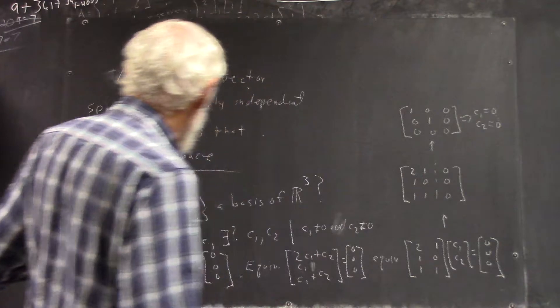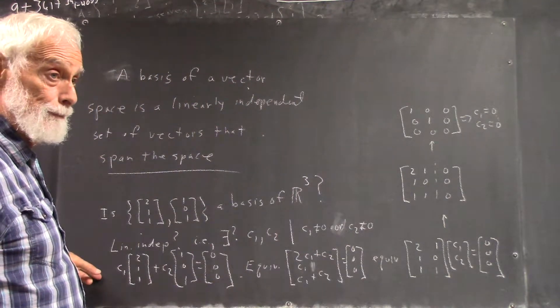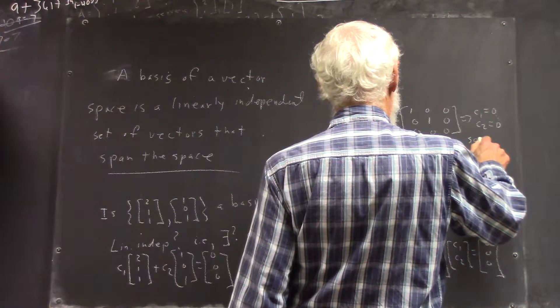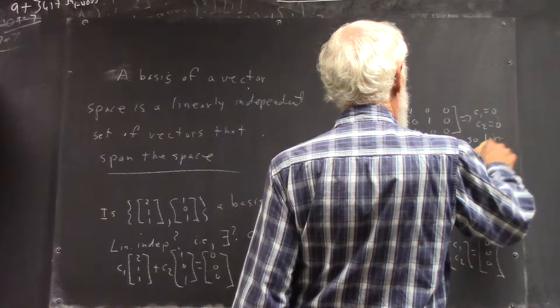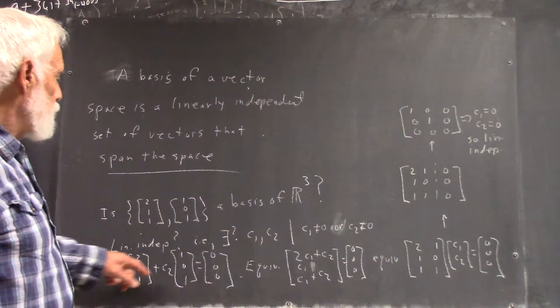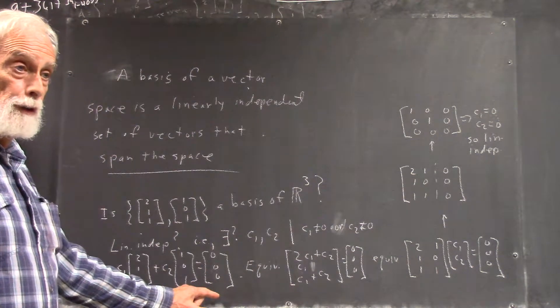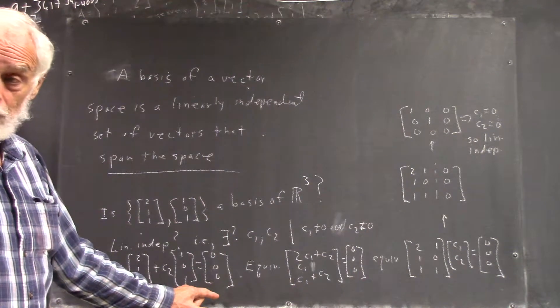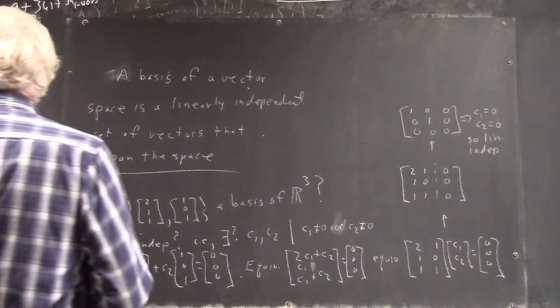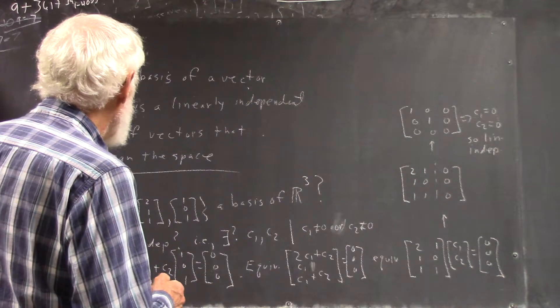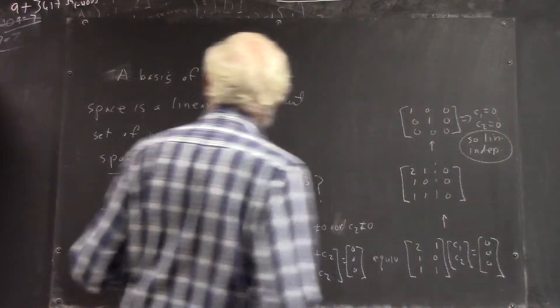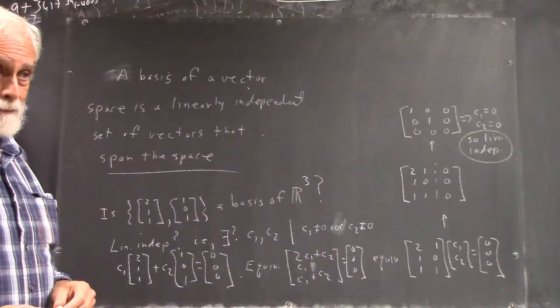Which tells you that c1 and c2 would both have to be 0. In other words, you can't do a sum of these that's equal to 0 unless c1 and c2 are equal 0, meaning these aren't multiples of each other. So, you want to think about that a little bit. So, they're linearly independent. So far, we're okay for getting a basis.